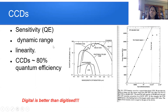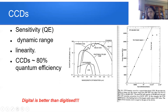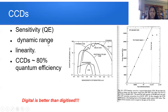The other advantage is dynamic range — the range of brightness of objects you can detect, from faint to bright. With CCDs you can change your exposure times — how long you observe an object. For a very bright object, you do not observe for too long, otherwise your CCD will get saturated. For fainter objects you need a longer exposure. By adjusting accordingly, you can adjust the range of objects you look at.